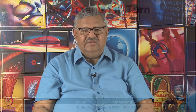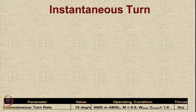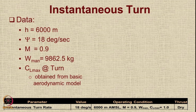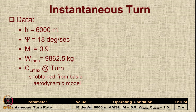The requirements specified are as mentioned: we need a turn rate of minimum 18 degrees per second while operating at 6 kilometers or 6000 meters above mean sea level at a Mach number of 0.9. CL max is given as 1.0 and the aircraft weight is equal to the maneuver weight. The CL max at turn is obtained from the basic aerodynamic model, which as we know is 1.0.